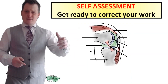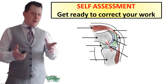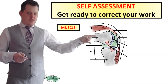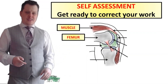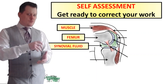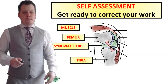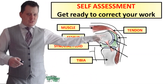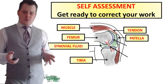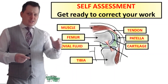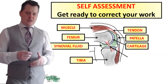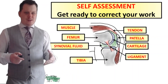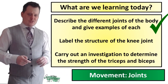Give yourself a tick for all the ones you've got right and make any corrections. At the top we've got the muscle connected to the bone, pulling in different directions. The bone at the top of the leg is the femur. The synovial fluid helps reduce friction within the joint. The bone at the bottom is the tibia. Connecting the muscle to the bone at the top is a tendon. Then there's the kneecap, or patella. Cartilage on the end of the bone also prevents friction within the joint. Finally, the ligament connects bone to the other bone. We've now labelled the structure of the knee joint.